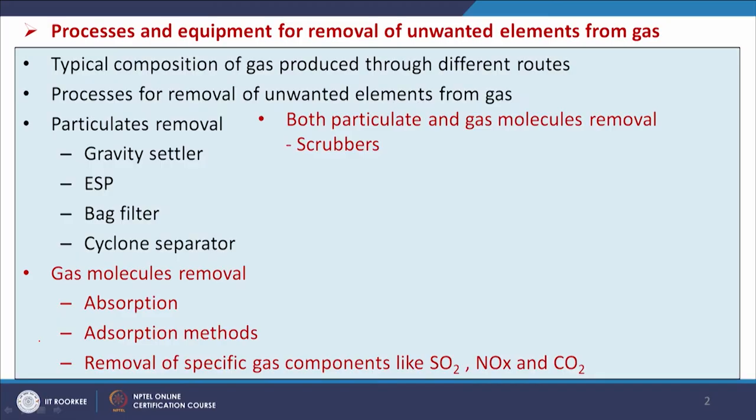Hello everyone. Now we will start discussion on the topic air pollution control part 4. In parts 1, 2 and 3, we have discussed the equipment used for the control of air pollution, particularly particulate matters. Now in this class we will discuss the processes used to remove particulate as well as gas components — scrubbers, in which both are removed, and gas molecule removal by absorption, adsorption-based methods, as well as removal of specific gas components like SOx, NOx and CO2.